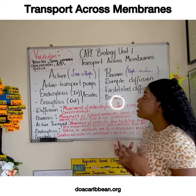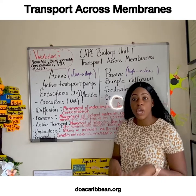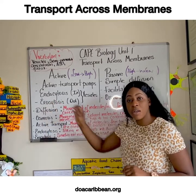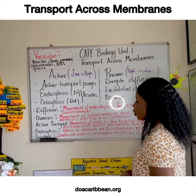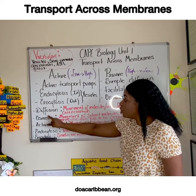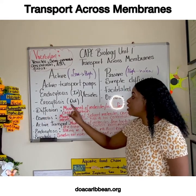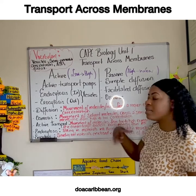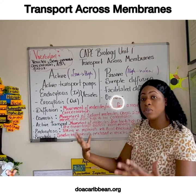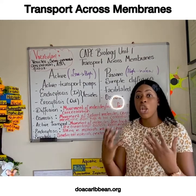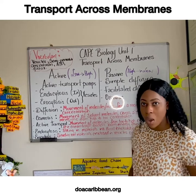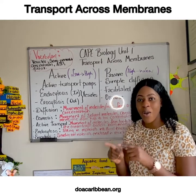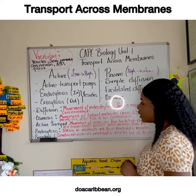For the CSEC and Cape biology students, you must know the following definitions and examples of each. Diffusion is the movement of molecules or ions from a region of high concentration to a region of low concentration — the molecules or ions are moving down a concentration gradient.